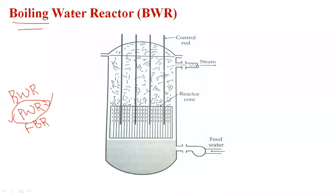The Boiling Water Reactor (BWR) is one of the simplest types of water reactors. The fuel used is enriched uranium, that is uranium-235. In this reactor, water is used for both the moderator and coolant purpose. The steam is generated in the reactor itself — it does not use a separate moderator circuit, only the reactor is used.